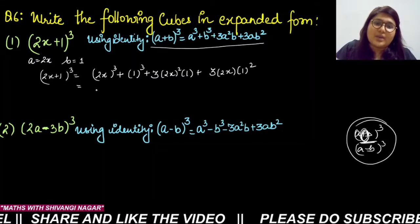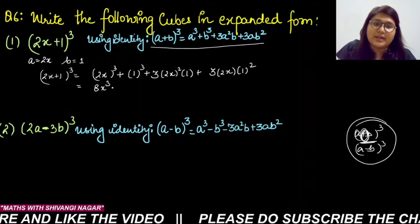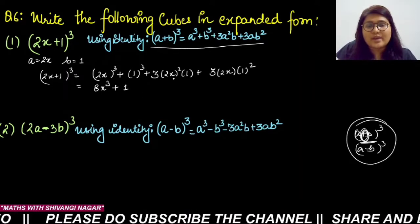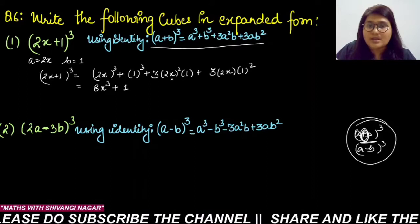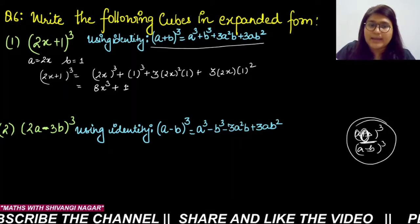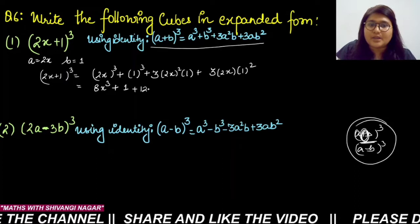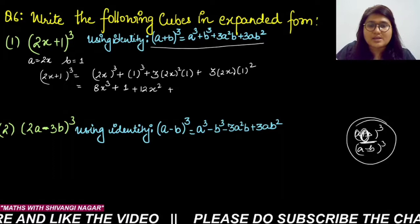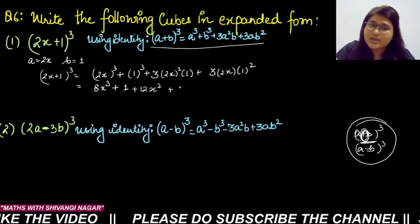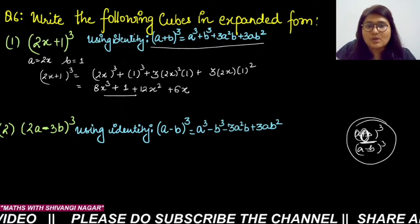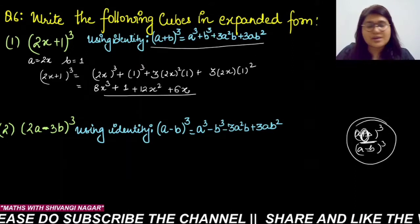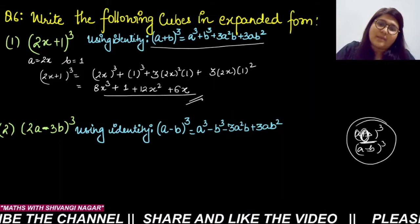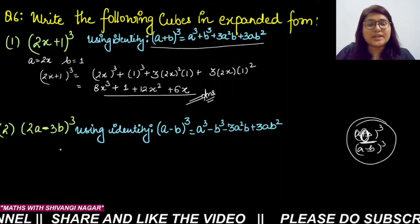Solving: 8x³ + 1 + 3(4x²)(1) + 3(2x)(1) = 8x³ + 1 + 12x² + 6x. So this is the final expansion form of (2x + 1)³.